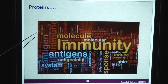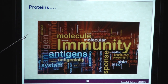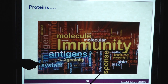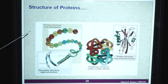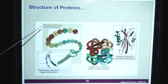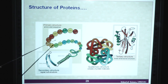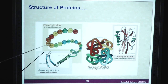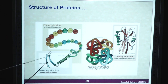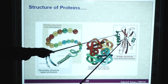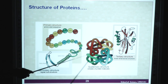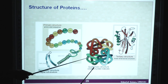Proteins have different functions in immunity and immunology — we have different immunoglobulins, all made up of proteins. We have antigens and antibody molecules, which are very important biomolecules under biochemistry. The primary structure of proteins is linear in nature, connected by amino acids. The secondary structure is a regular surface structure with slightly more complexity. The tertiary structure is three-dimensional in nature, and the quaternary structure is very complex.